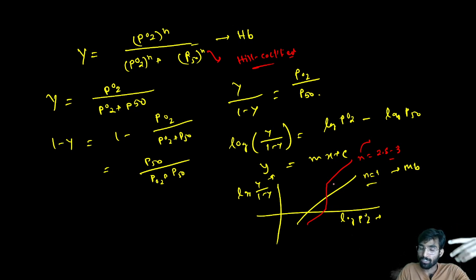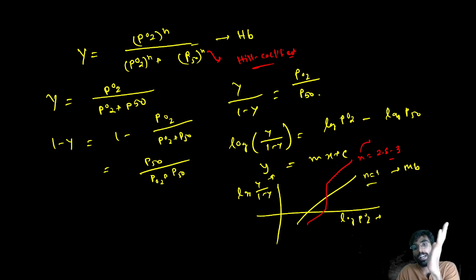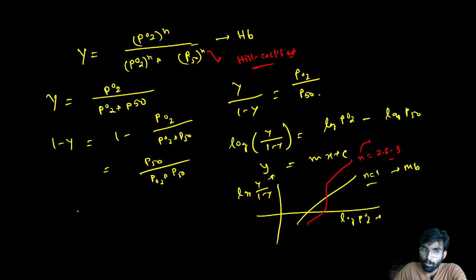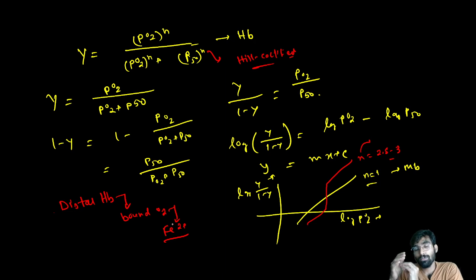That covers the oxygen saturation curve and how to calculate the fraction of saturation. We also discussed how hemoglobin and myoglobin bind to oxygen and how it is stabilized. The proximal histidine binds directly to the heme iron (Fe2+), while the distal histidine stabilizes the oxygen bound to hemoglobin. O2 binds to Fe2+, not to the protein itself.